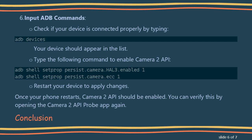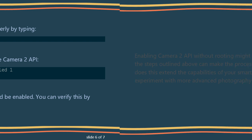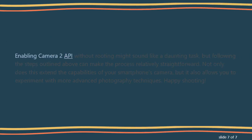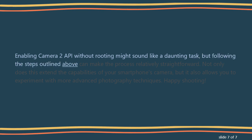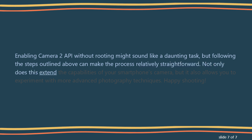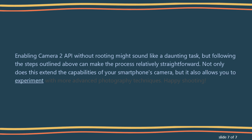Conclusion. Enabling Camera 2 API without rooting might sound like a daunting task, but following the steps outlined above can make the process relatively straightforward. Not only does this extend the capabilities of your smartphone's camera, but it also allows you to experiment with more advanced photography techniques. Happy shooting!